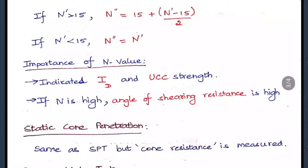For dilatancy correction, if N' > 15, then the corrected value N'' = 15 + (N' − 15) / 2. If N' ≤ 15, no correction is needed. The N value indicates relative density (ID) and unconfined compressive strength (UCC). A high N value means the angle of shearing resistance of the soil is high.